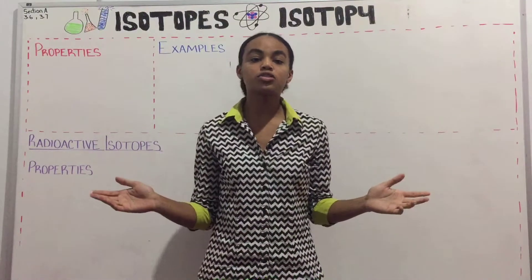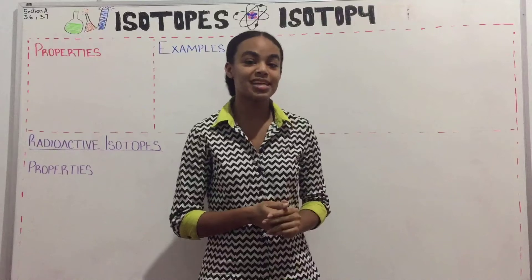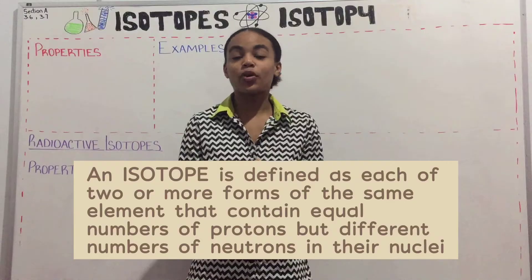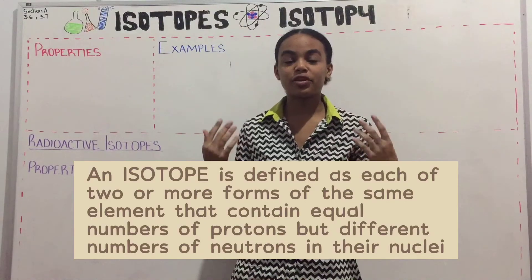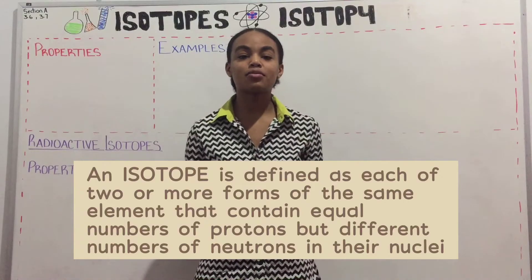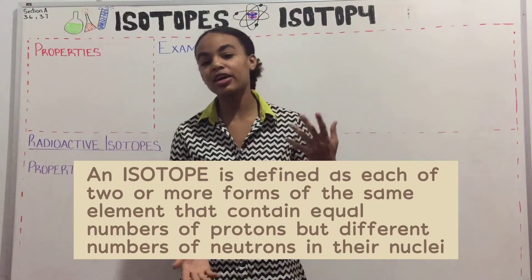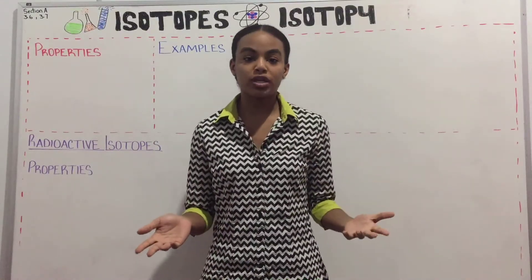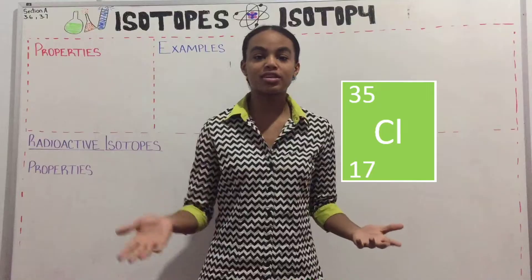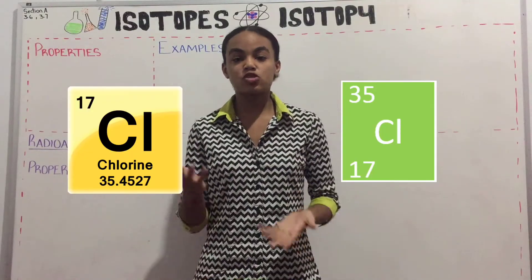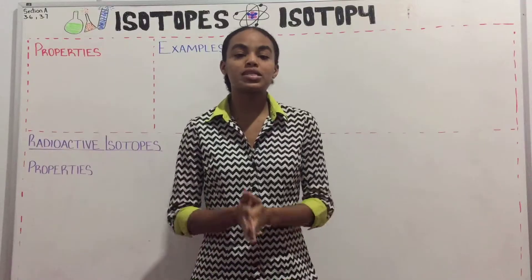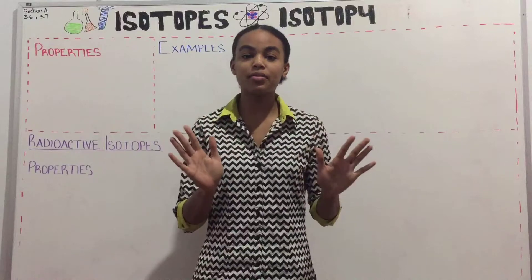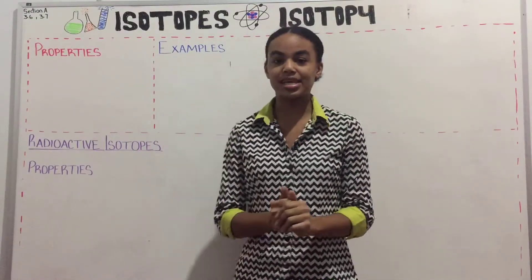The first thing you want to understand before getting into this video is what exactly isotopes are. An isotope is an atom or atoms of the same element that have different mass numbers, and this difference in mass numbers is as a result of an increase or decrease in the number of neutrons in their nucleus. For example, we have chlorine-35 and chlorine-37. Chlorine-35 has two less neutrons than chlorine-37, so we say that these two atoms are isotopes of that element.